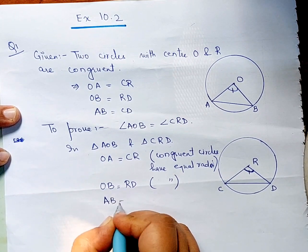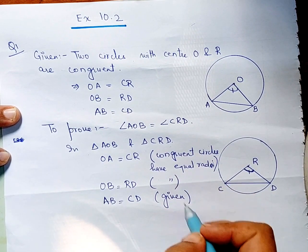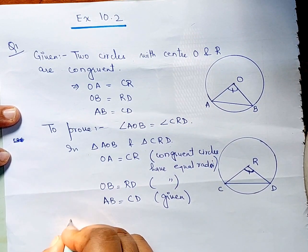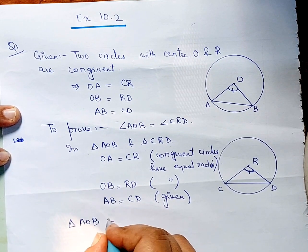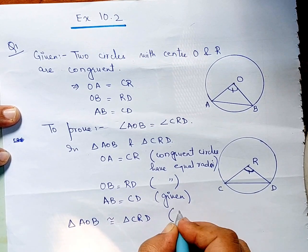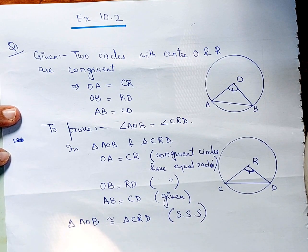This is given. Then look at the side side side. By SSS, we can say that triangle AOB is congruent to triangle CRD. Okay, clear, both triangles are congruent.